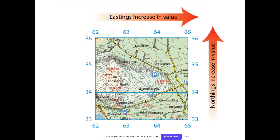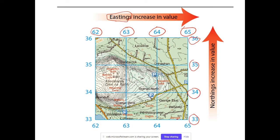When you look at a map, you'll notice at the top you have numbers increasing from left to right — 62, 63, 64, 65, 66, and so on. These are called eastings. Then you have numbers on the side — 33, 34, 35, 36 — which are called northings. The numbers could go 01, 02, 03; it just depends on the map. The numbers at the top and bottom correspond with each other.